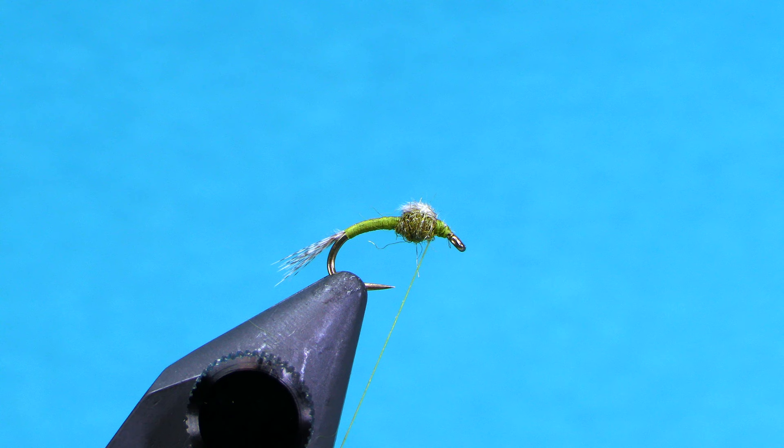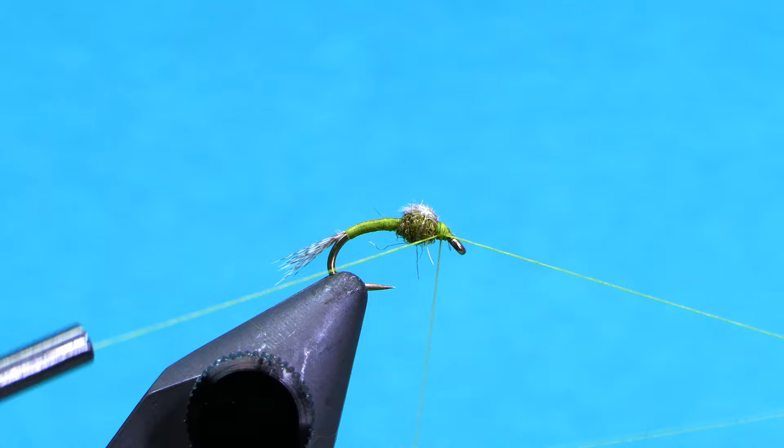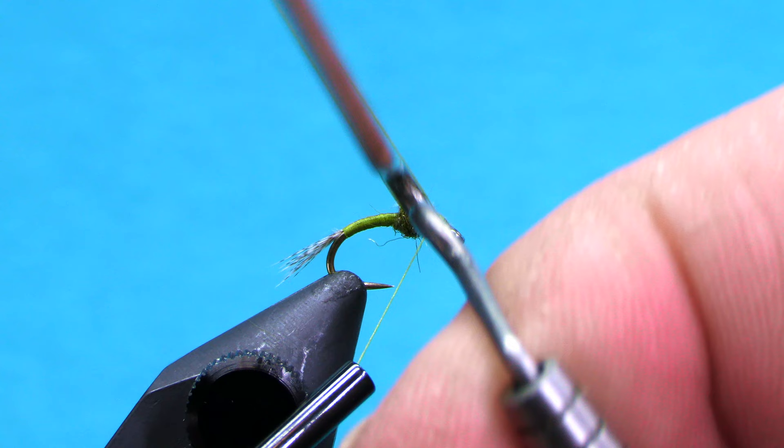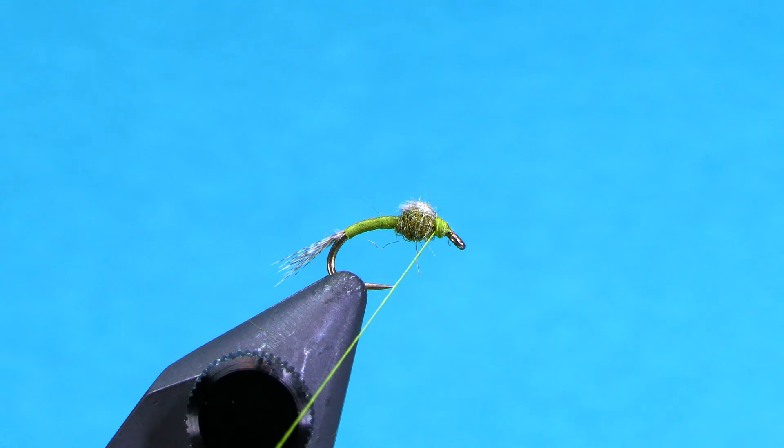Now you could definitely put a tungsten bead on this fly. A small nickel, a black nickel tungsten bead would be really nice on this fly to give it just a little bit of weight. But it's also nice to have some flies in your box that aren't all weighted with tungsten beads. So tie some of both and you'll have an option for different fishing conditions.